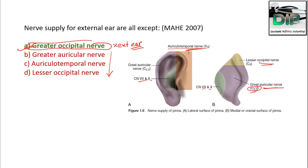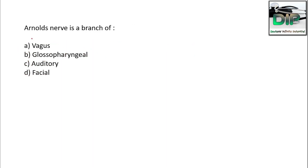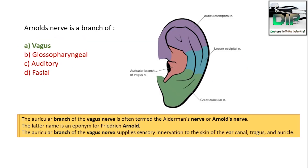The Arnold nerve is a branch of which nerve — vagus, glossopharyngeal, auditory, or facial? The correct answer is vagus. The auricular branch of the vagus nerve is also called the Arnold nerve, named after Frederick Arnold.